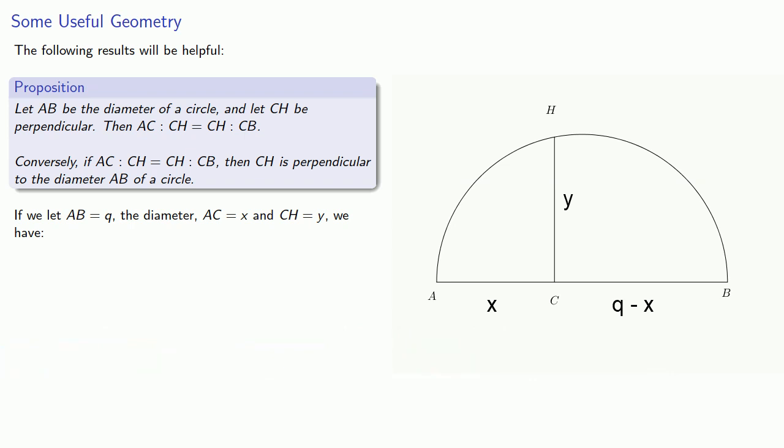And so we're assuming that AC is to CH as CH is to CB. X is to y as y is to q minus x. So we can rewrite this as a rational equation. And do a little work and rewrite this as the equation of a circle.